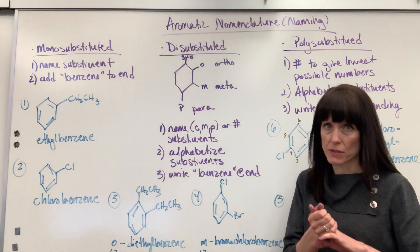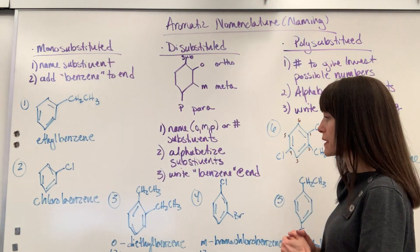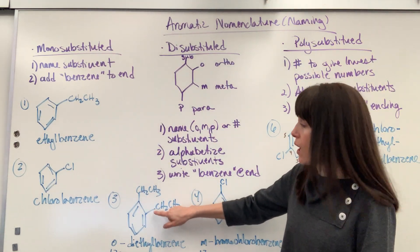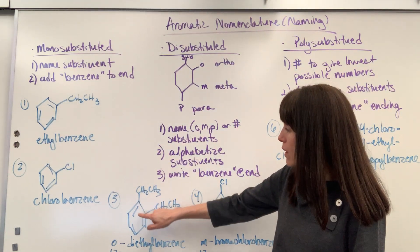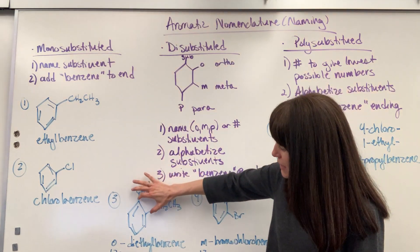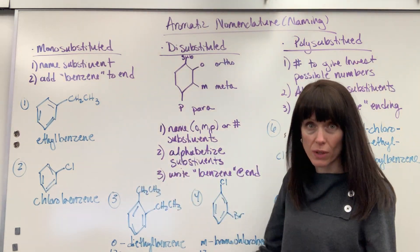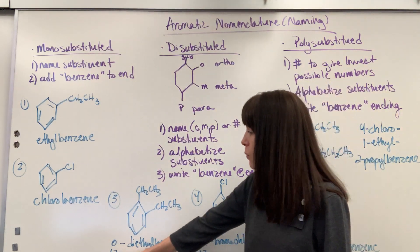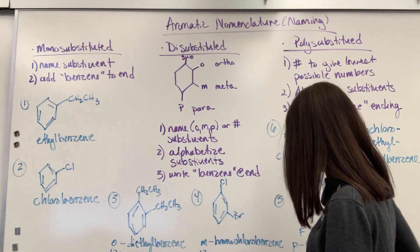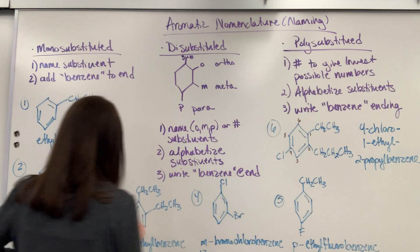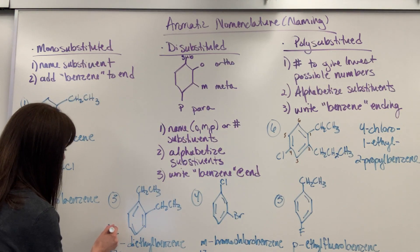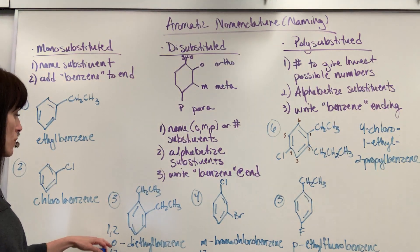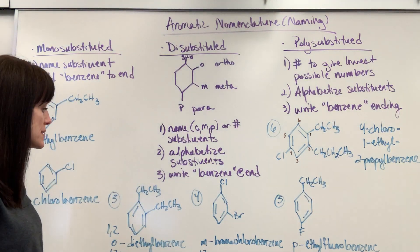I have three examples so you can see all three possibilities. Notice I have two ethyl groups — one at the one carbon, one at the two carbon. So because they're next to each other, the one and the two, that's ortho. So you could say ortho, or you could also write that as 1,2-diethylbenzene. It could be 1,2-diethylbenzene or ortho-diethylbenzene.